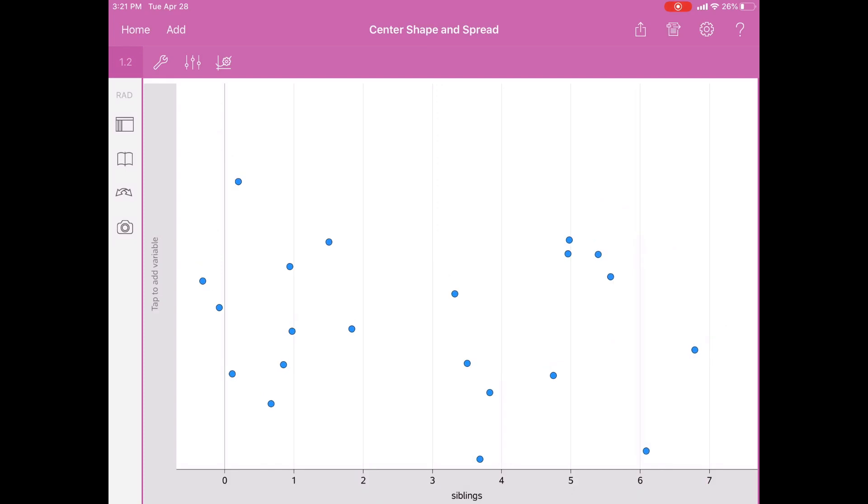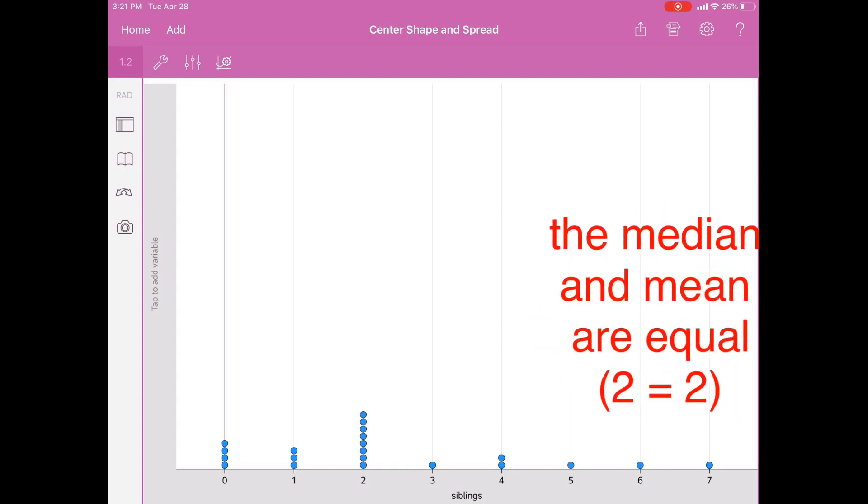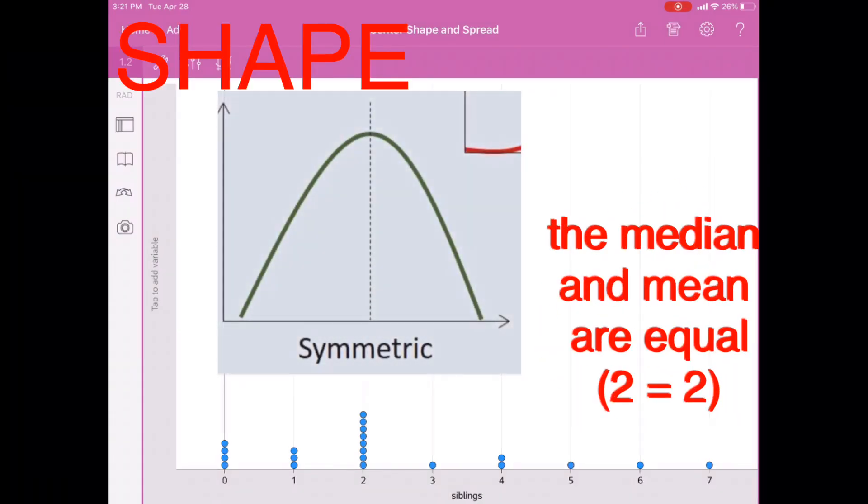Now we turn the data into a dot plot so we can see the shape knowing the centers. When the mean and median are equal, the shape is symmetric because both centers are lined up in the center.